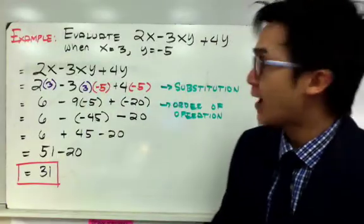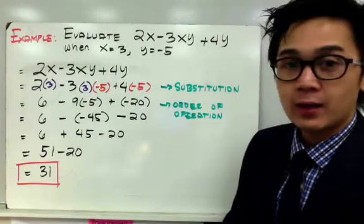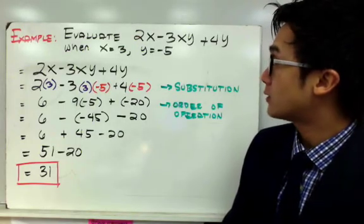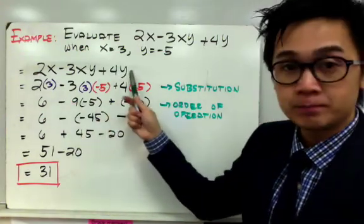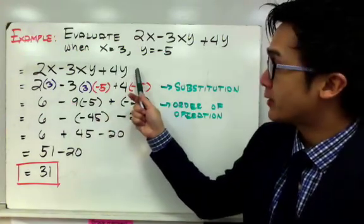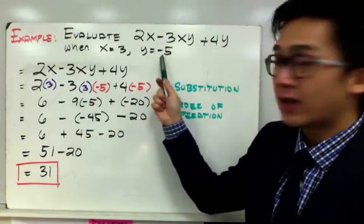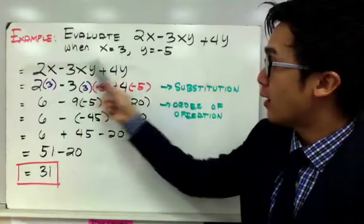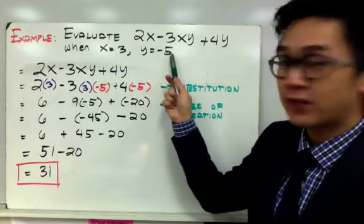For the second example, we have a little bit longer expression. So we have 2x minus 3xy plus 4y when x is equal to 3 and y is equal to negative 5. Using our expression, the first step is to replace all our variables or letters with our corresponding value. So for x equal to 3, we will replace all our x's with 3. And for y equals negative 5, all our y's will be changed into negative 5 by substitution method.